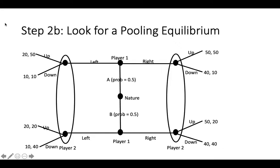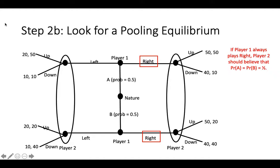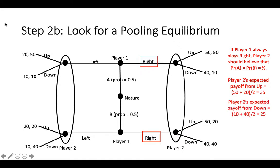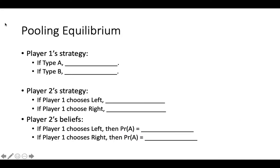We can generate a game that does have a pooling equilibrium if we adjust the payoffs a bit. In this game, player 1 will always play right because it results in higher payoffs for player 1, regardless of whether they are type A or type B. Since player 1's action does not tell player 2 anything about their type, player 2 has no information on which to update the prior probabilities that nature started the game with. Therefore, player 2 should believe that player 1 is still equally likely to be type A or type B. Since player 2's expected payoff from up is 35 and from down is 25, player 2 should play up. We have now found a pooling equilibrium.